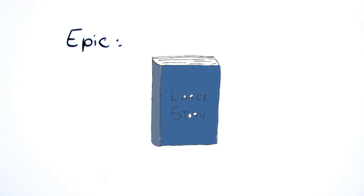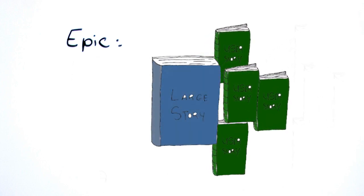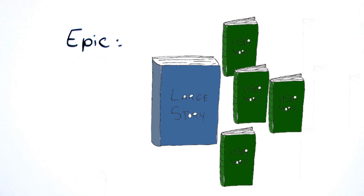Epic: An epic is a large story that cannot be created in one sprint. It should, like a user story, describe one thing, but should be broken down into smaller user stories for sprint planning purposes.